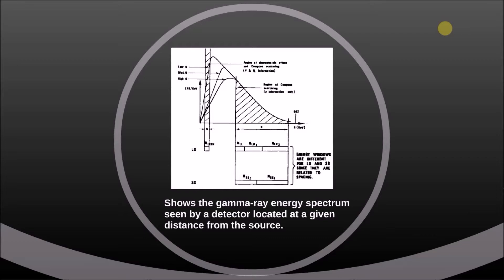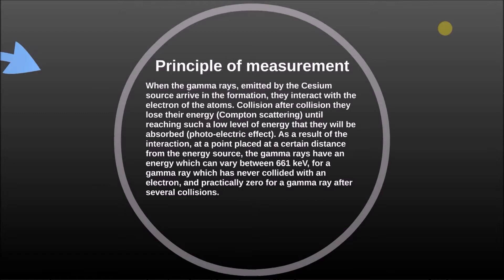Principle of measurement: When the gamma rays emitted by the cesium source arrive in the formation, they interact with the electrons of the atoms. Collision after collision, they lose their energy through Compton scattering until reaching such a low level of energy that they will be absorbed.